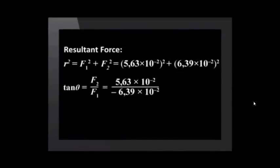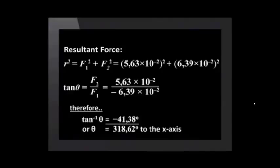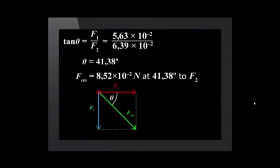And the resultant of the two forces is 8.52 times 10 to the negative 2 Newtons. The direction of the resultant force is minus 41.38 degrees downwards from the horizontal force F2. Now we solve for theta using the trig function. The direction of the resultant force is 41.38 degrees to F2.